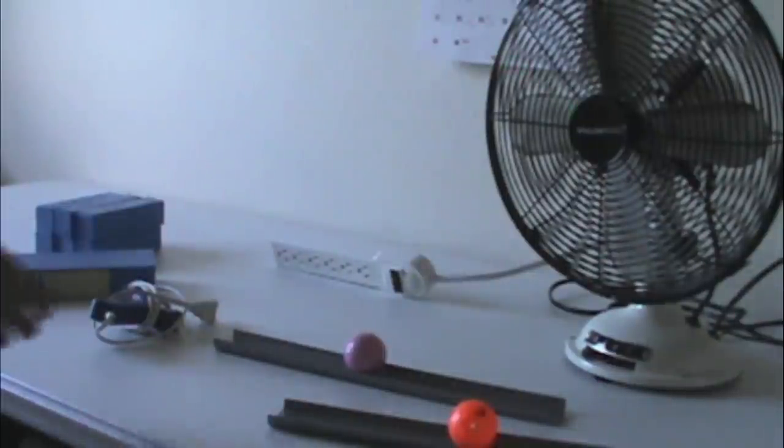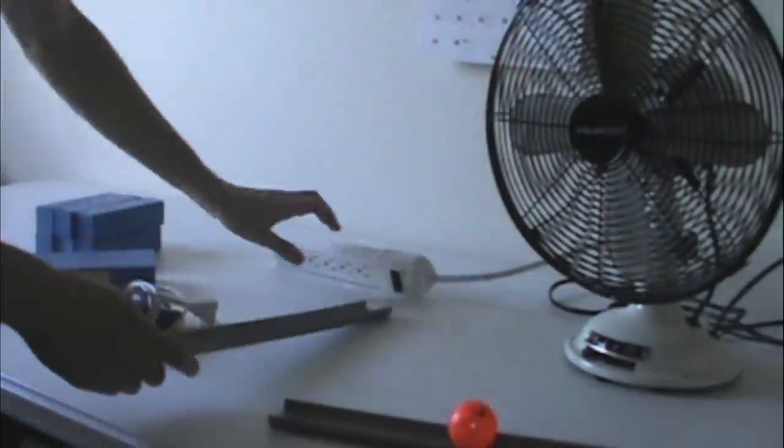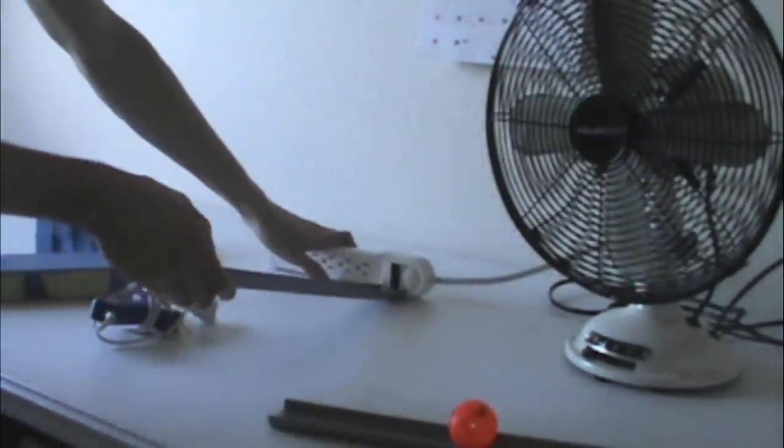This is a tutorial on how to make use of any electrical device in a Rube Goldberg chain reaction by using a power strip.